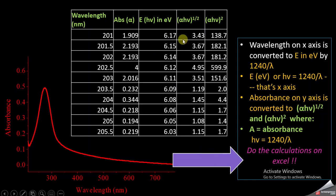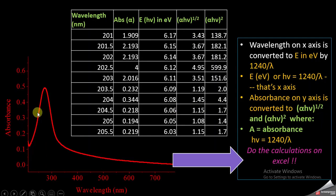You can also do all these calculations in Excel very simply by applying the formulas, and all your wavelength and absorbance data can be converted into these values. Now let's see what happens when we convert this spectrum and data into the direct band gap Tauc plot and the indirect band gap Tauc plot.